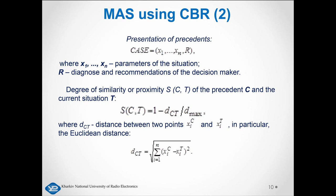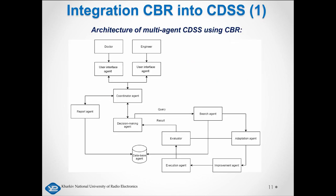To determine the value of the degree of similarity S, it is necessary to find the maximum distance d_max in the selected metric. To combine CDSS agents and CBR agents, you need to connect the Search Agents to the Decision Agent. The architecture of the system is shown on slide 11, and the sequence diagram is shown on slide 12.